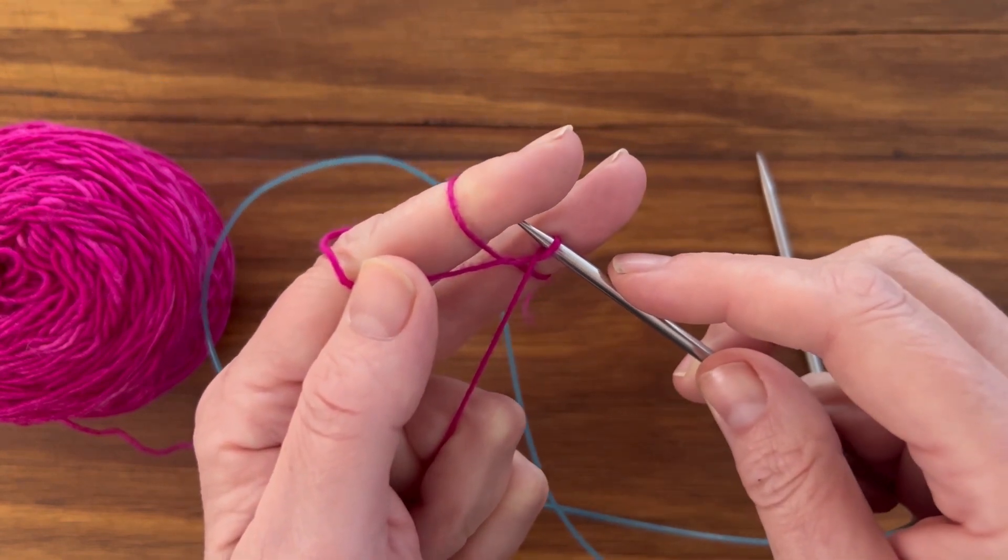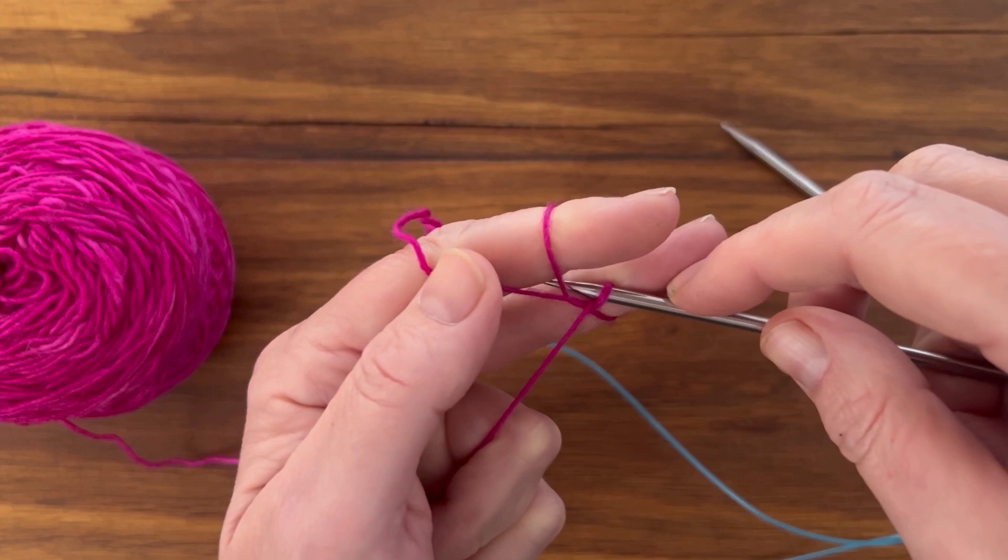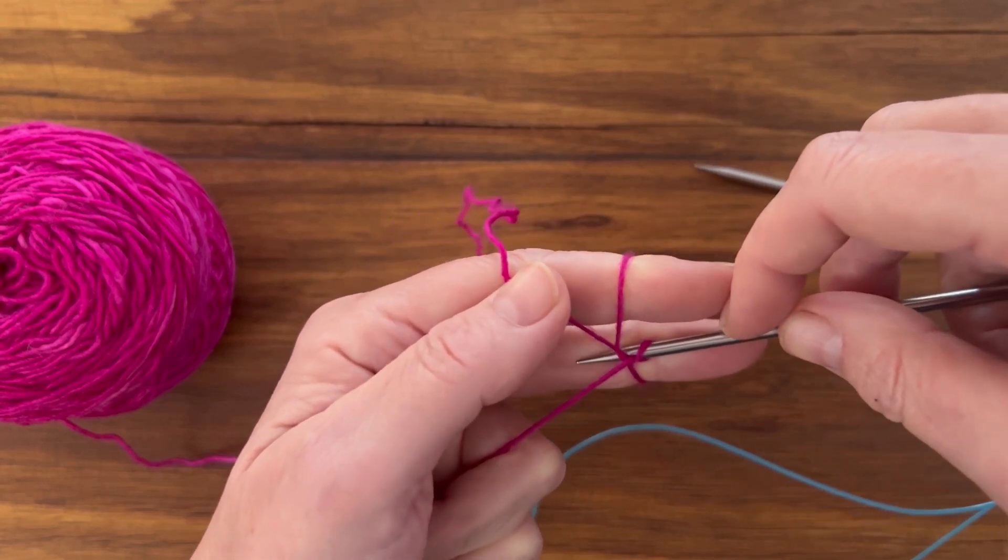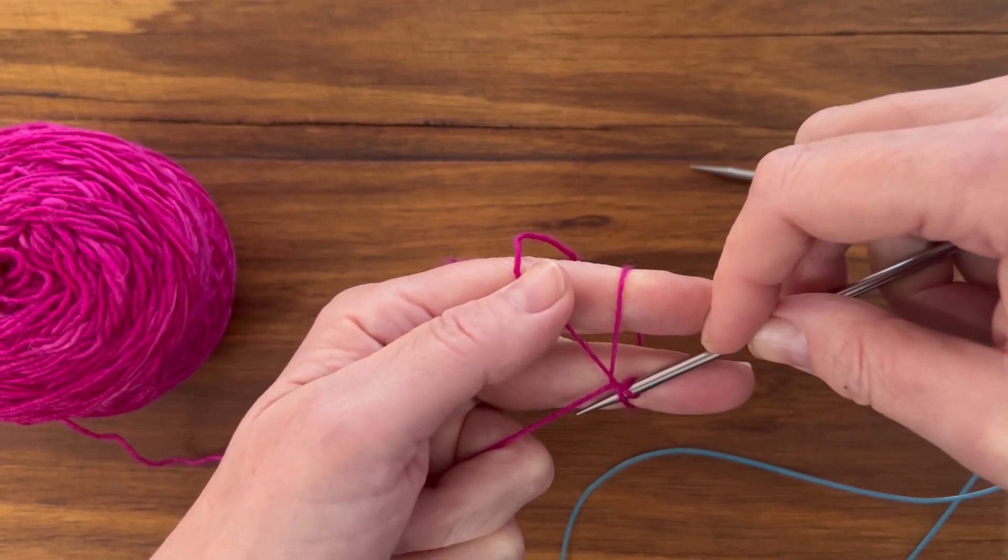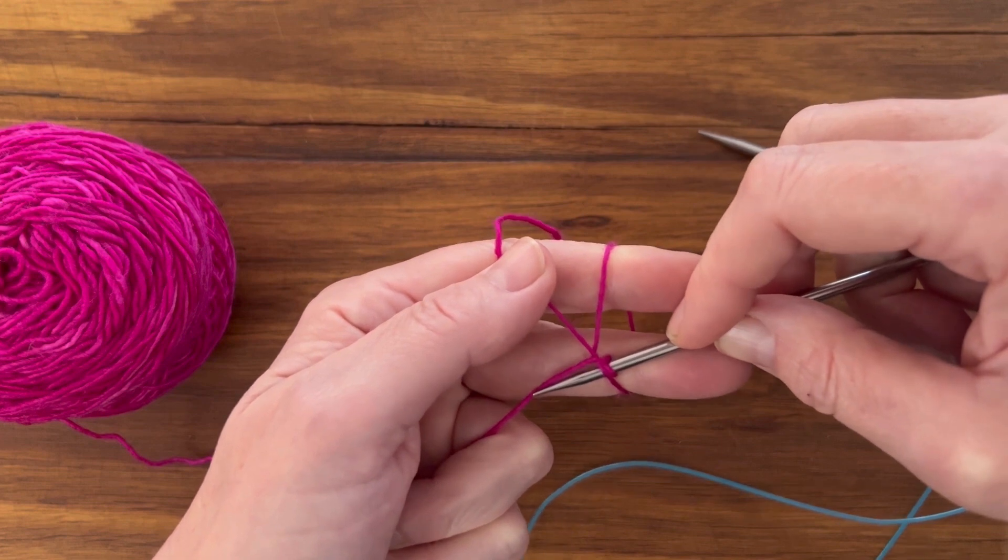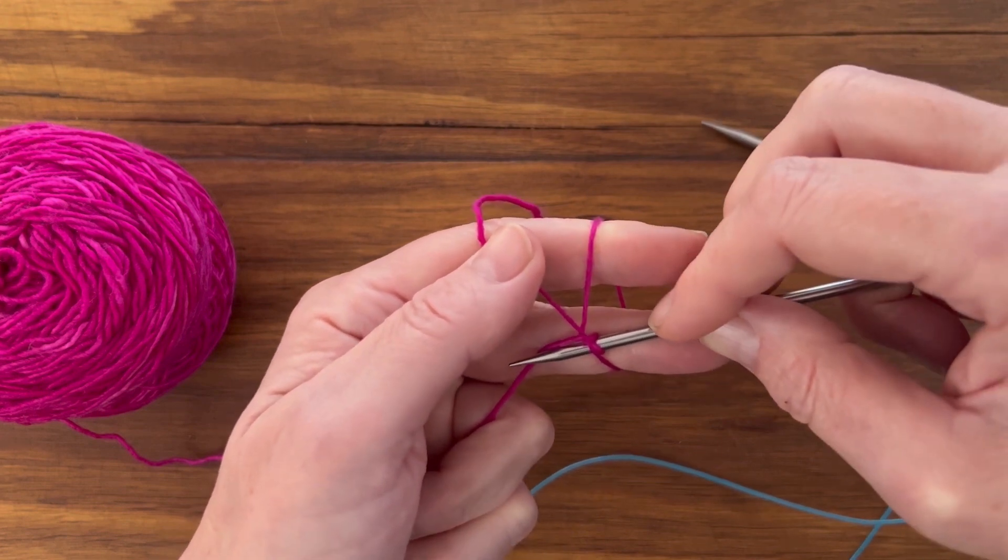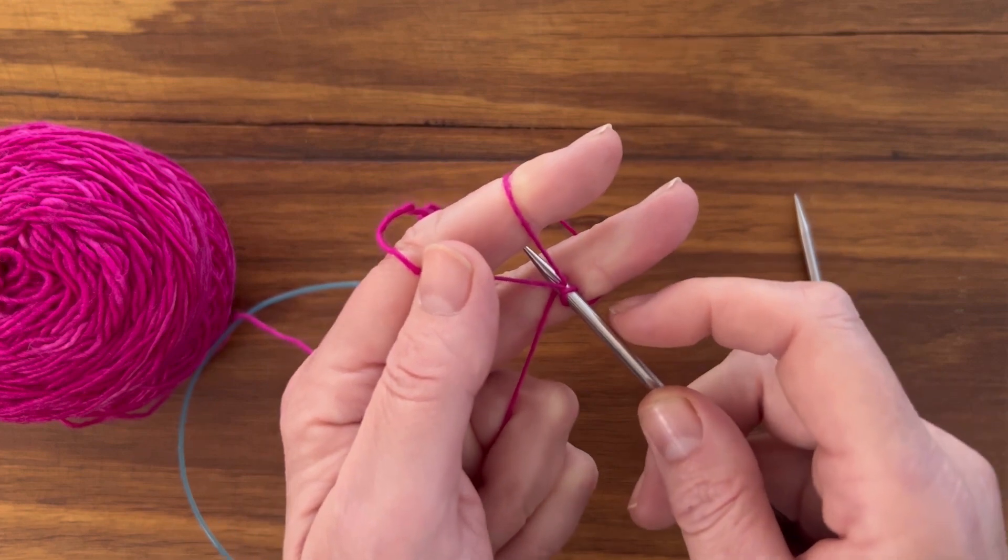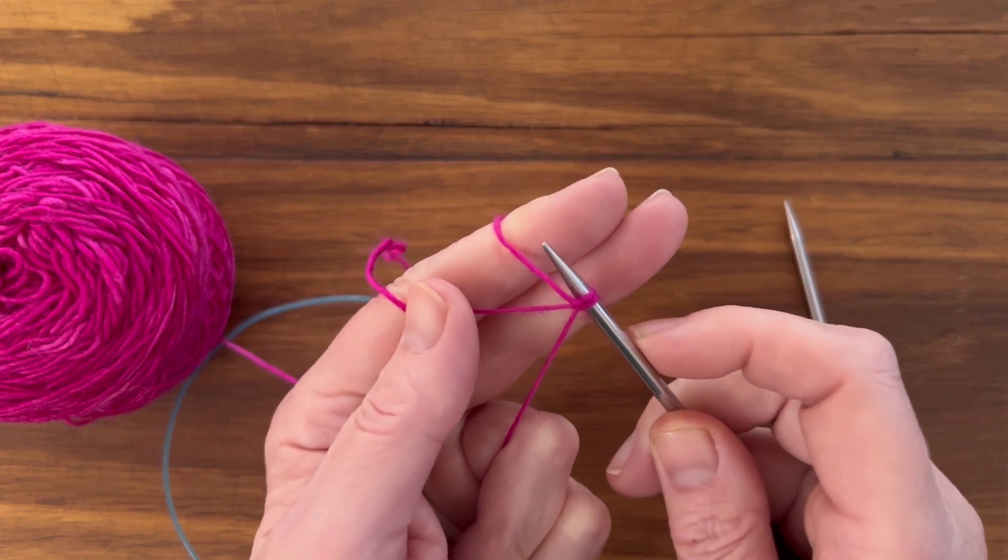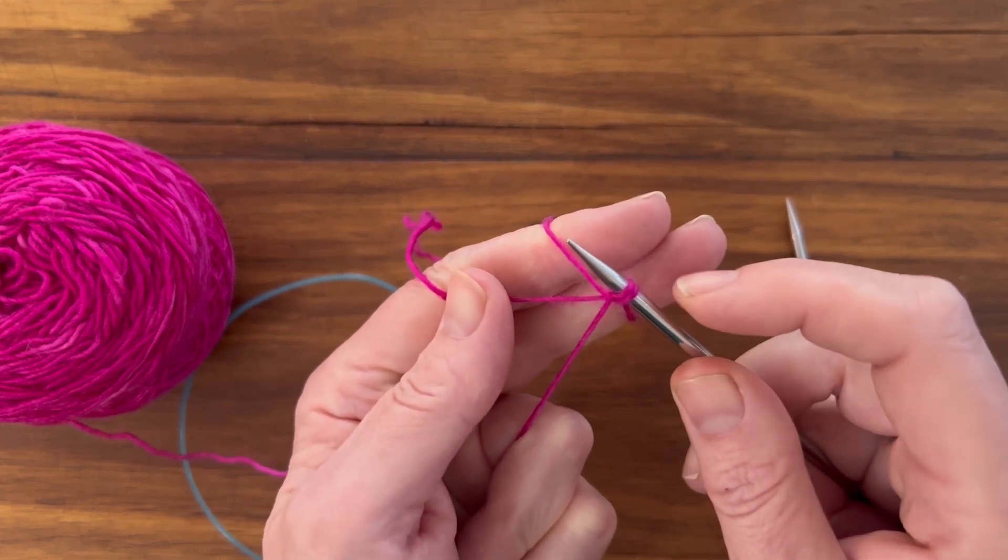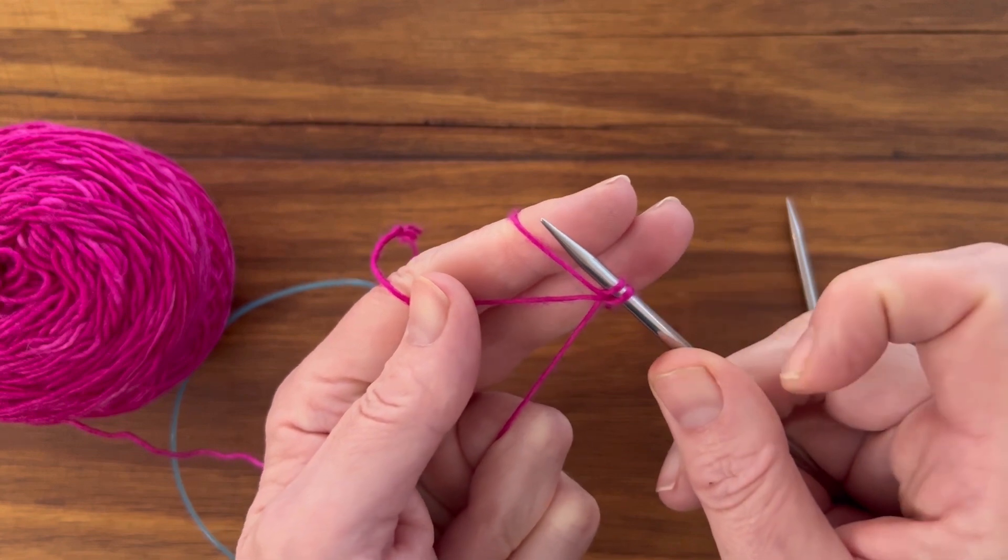Lift it up over and through the loop. Bring it back under the other side of that working yarn. Pick up that loop and bring it up back through the center of the loop. And you have two stitches cast on.